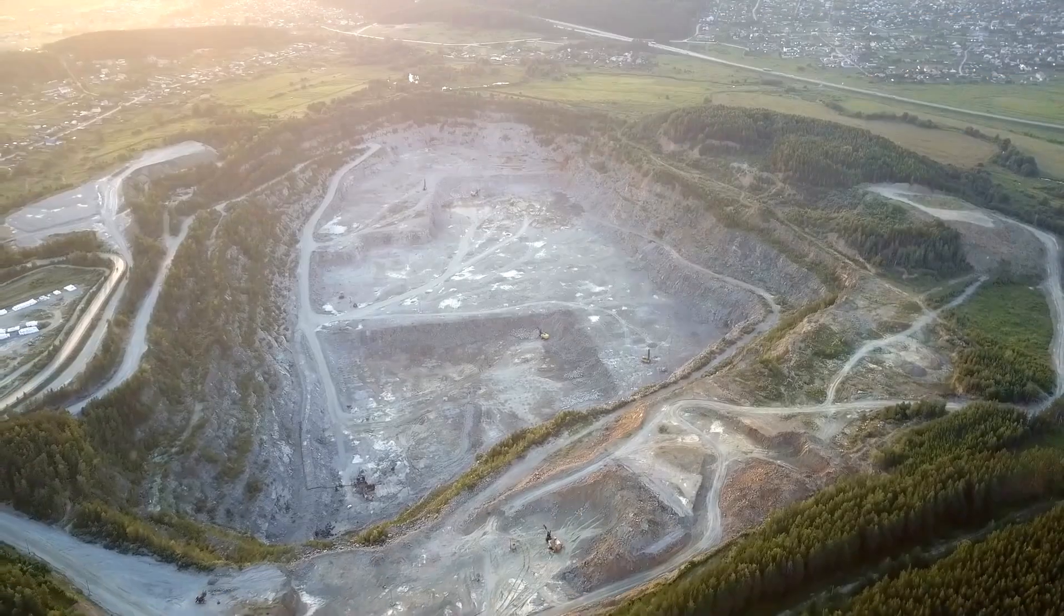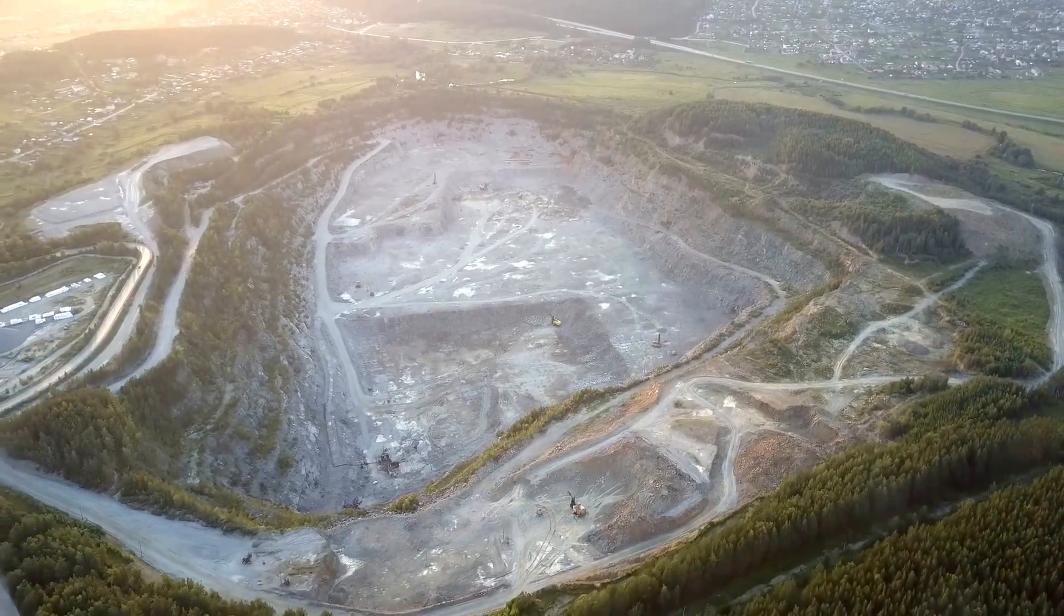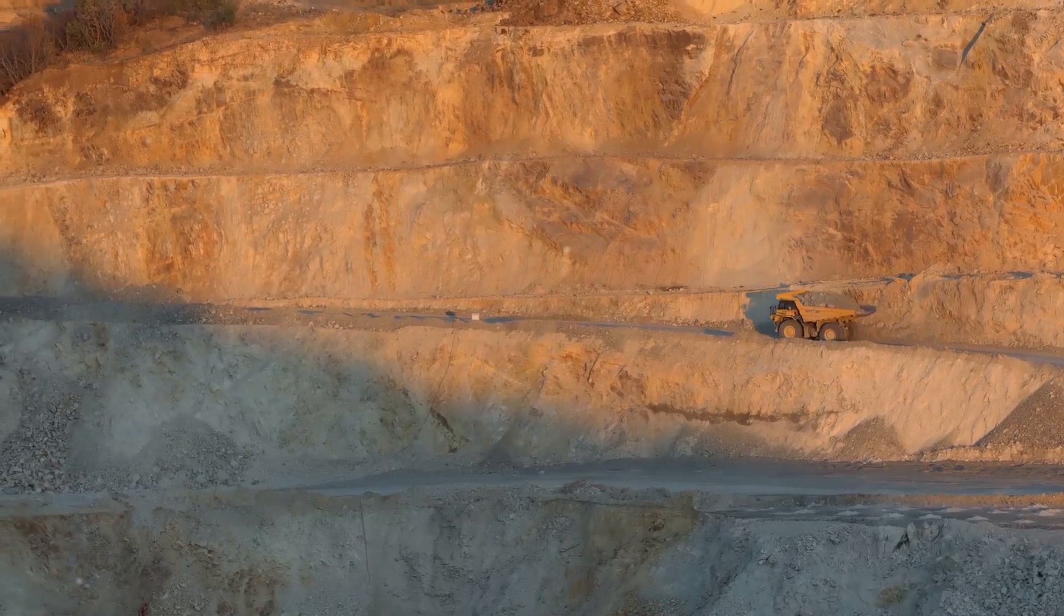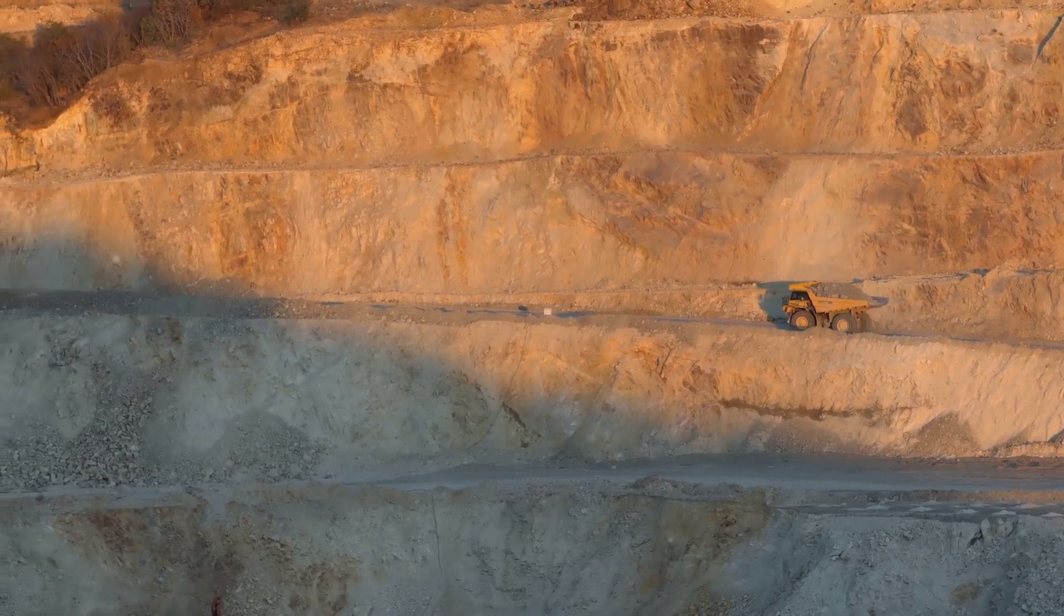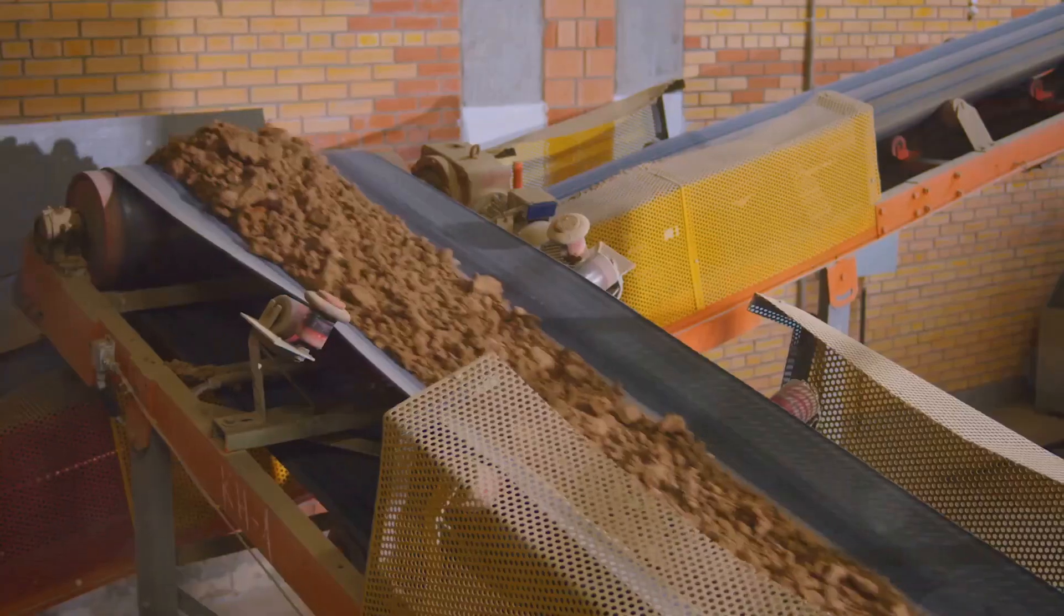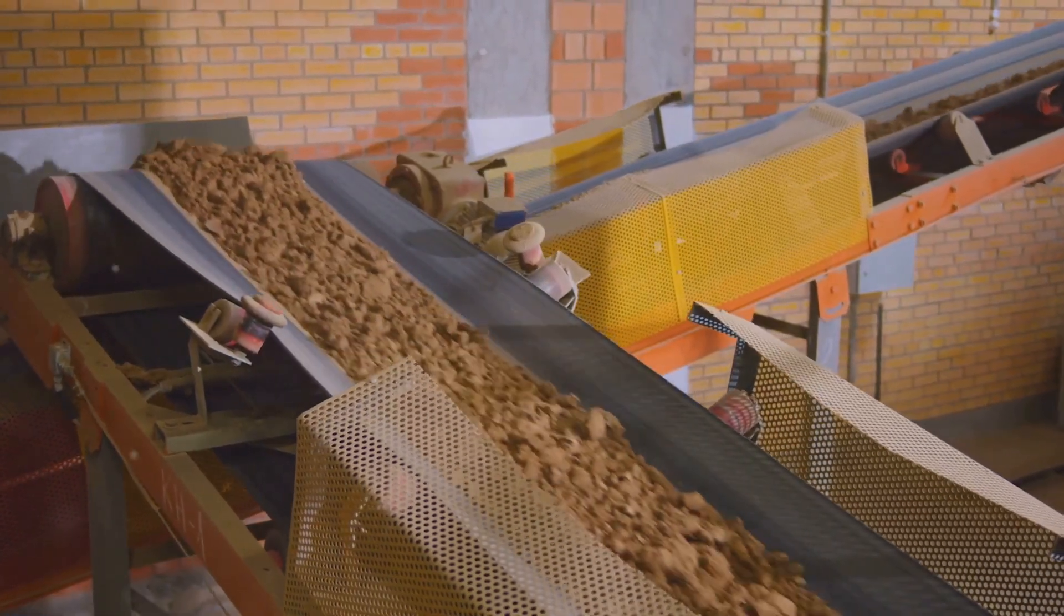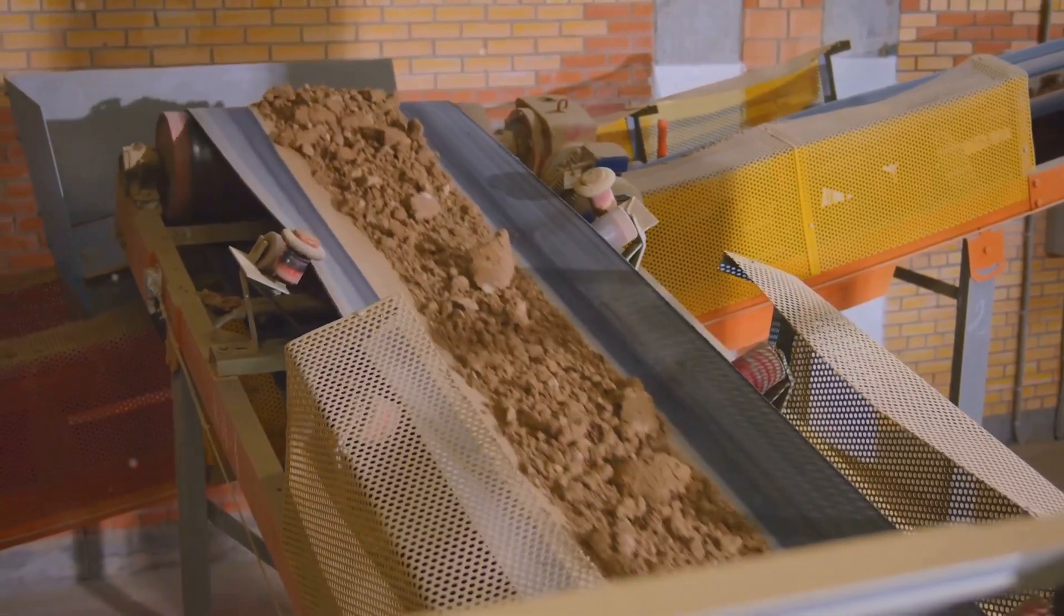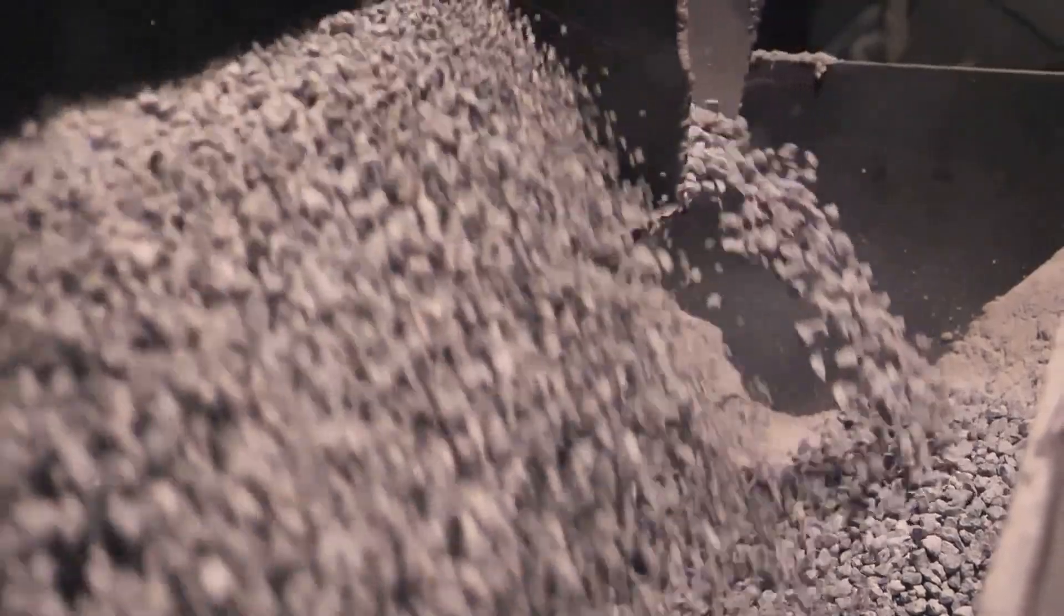The journey of graphite from mine to pencil is an arduous one. Graphite is extracted from underground mines or open pits, often located in remote and challenging environments. Once extracted, the raw graphite ore undergoes a series of processes to remove impurities and refine its quality. The ore is crushed, ground and washed to separate the graphite from the surrounding rock.